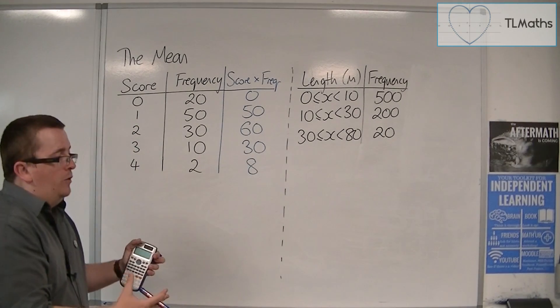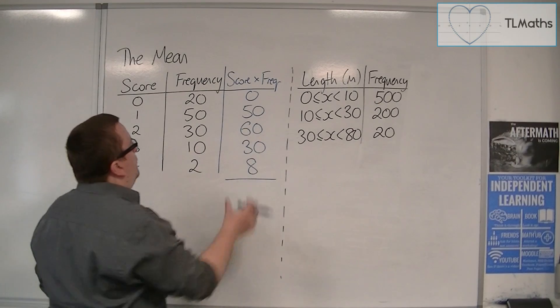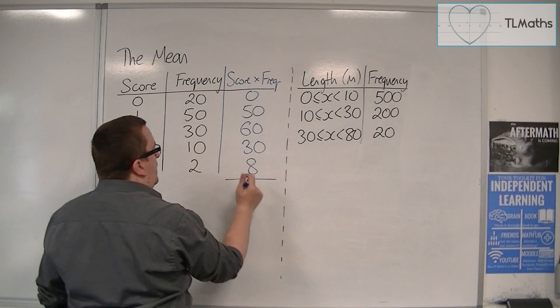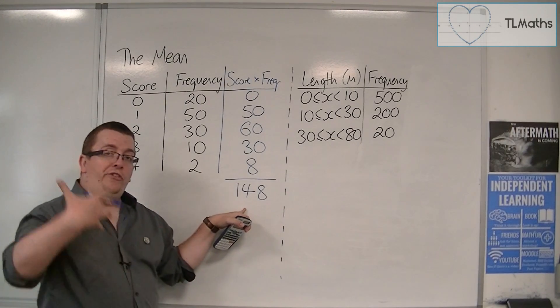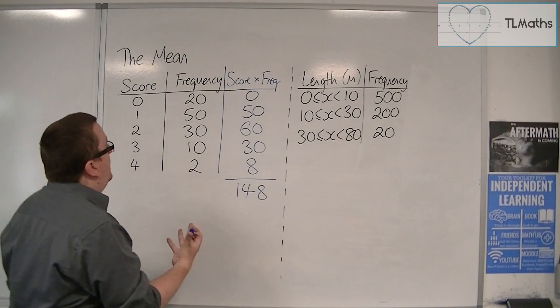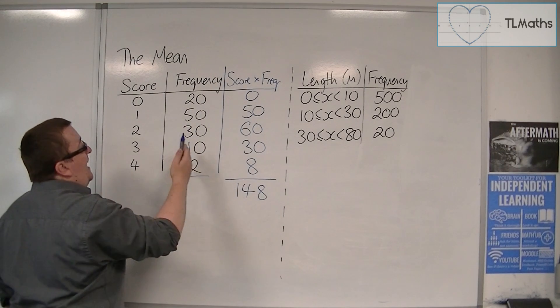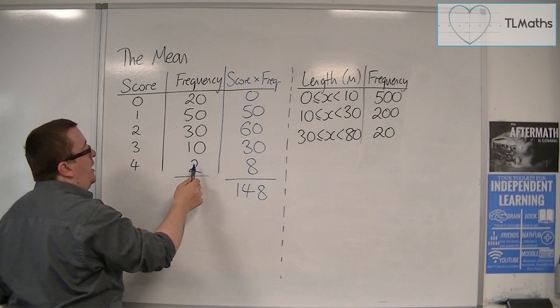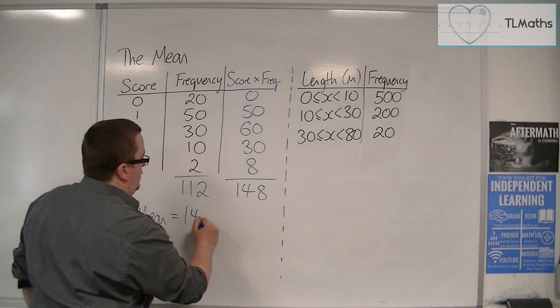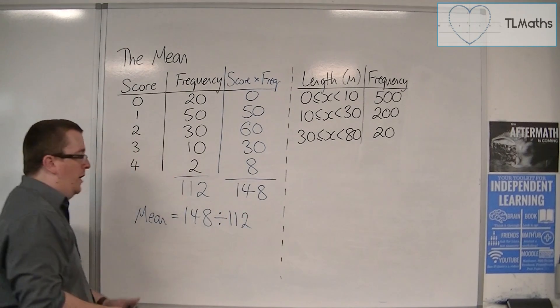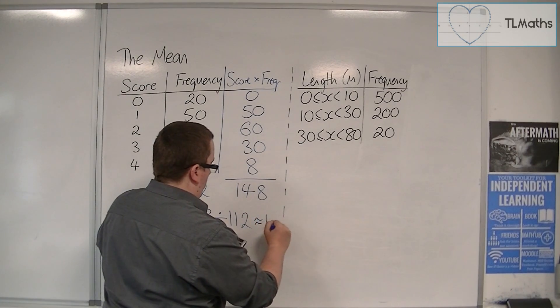And once I'd worked that out, I'd worked out what each line would add up to, I can add all of those together to get myself a final total. So 50 plus 60 is 110, 140, 148. So if I added up all those numbers on that sheet of paper, they would all add up to 148. And I now want to divide that by how many there are. And that is given to me by the total frequency. So the total frequency adds up to 20, 70, 100, 110, 112. So we've added them all up, and we're going to divide that by how many there are, 112. So 148 divided by 112 gets me approximately 1.32.